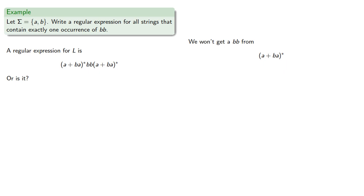Well, we can't get BB in the first part. And since the first part has to end in A, the two B's here are going to be the first occurrence of the pair BB.